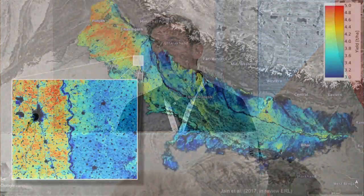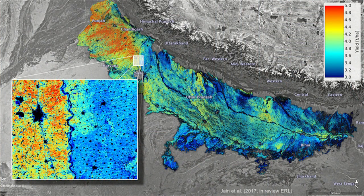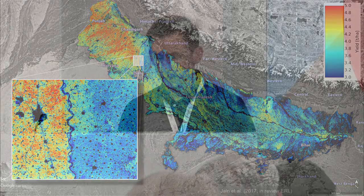Similarly, here is a map of the average wheat yield in the northern regions of India — also a 30-meter estimate done with Landsat and MODIS. Now we are in the process of upscaling this even further, going from sub-national to national level, and hopefully at some point even globally.